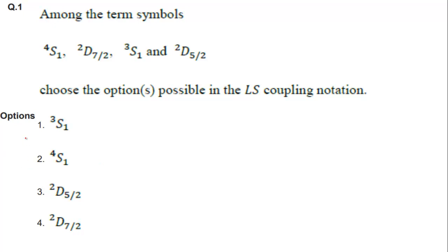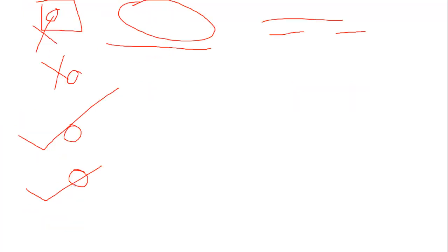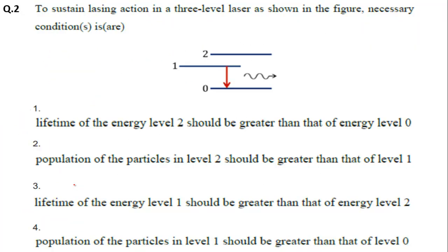So 3S1 and 2D5/2 are the two correct options for question 1. Moving ahead, question number 2 is a laser question: to sustain lasing action in a 3-level laser system as shown in figure, the necessary conditions are — this is also an MSQ type question. The options to check are about lifetime of energy level 2 being greater than that of level 0.